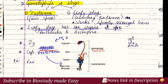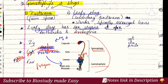Then branches are developed from the leafy stage. The next gametophyte stage continues. One method is fragmentation of the gametophyte, which is another form of reproduction.